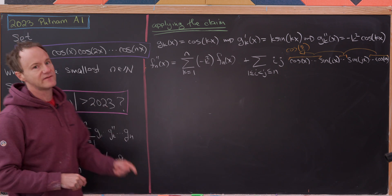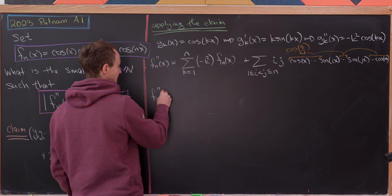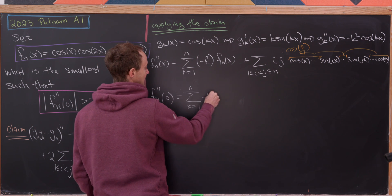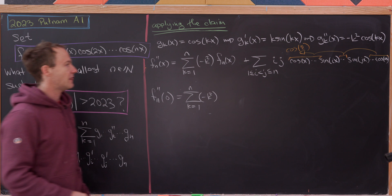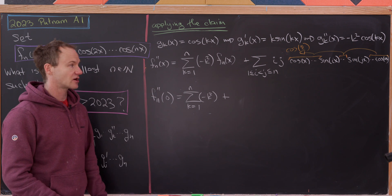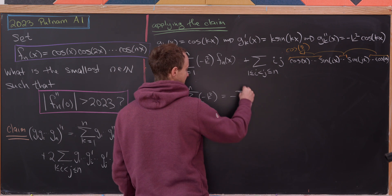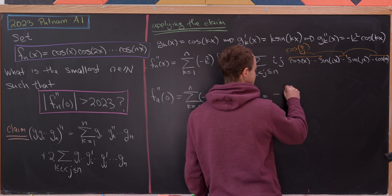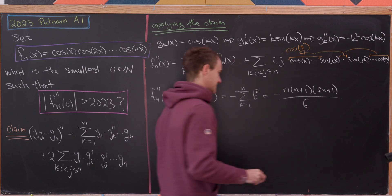Evaluating at zero provides a lot of simplification. We get f sub n double prime of zero equals the sum from k equals 1 to n of minus k squared times f sub n of zero — which is the product of a bunch of cosines of zero, all equal to 1. The cross terms all vanish because sine of zero is zero, and each cross term contains a sine factor. So we get minus times the sum of the first n squares, which has the well-known formula: minus n(n+1)(2n+1) over 6.